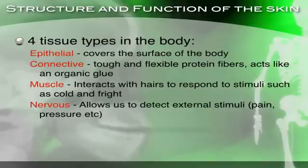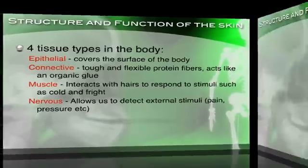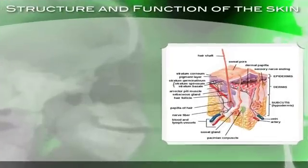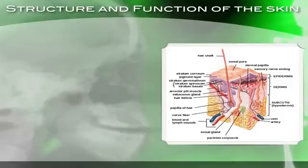So the four types of tissue: number one, epithelial; number two, connective; number three, muscle; and number four, nervous tissue. You know that for the test, and you'll answer those questions when I ask.